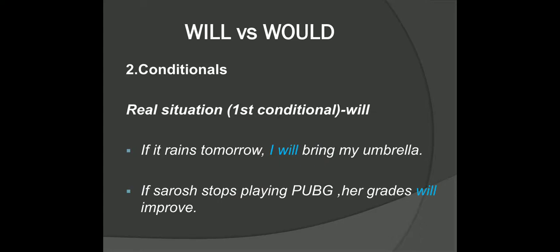Now you know the basic use of will and would. Let's look at the other more challenging use of these two words, which is conditionals — where you have a condition and a result. For example: 'If it rains tomorrow, I will bring my umbrella.' I am talking about something I will do in the future, but only on one condition — if it rains. These types of sentences are called first conditionals and are based on real situations.